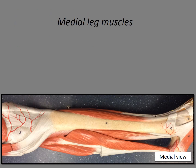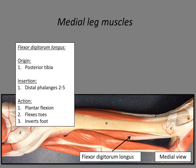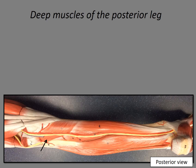Now we're looking at medial leg muscles. The muscle we're going to focus on is the flexor digitorum longus, which we're responsible to know origin, insertion, and action. The origin is the posterior tibia. The insertion is the distal phalanges two through five — this makes sense because it's a flexor digitorum muscle, meaning it flexes the digits, so the insertion needs to be in the phalanges. The action is to plantar flex and flex the toes, and it also inverts the foot.